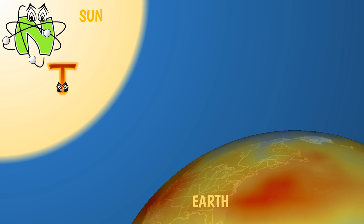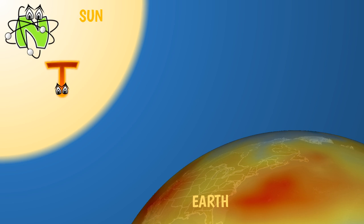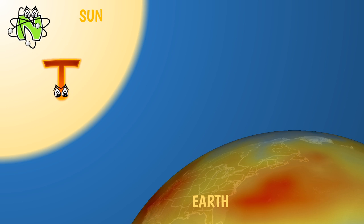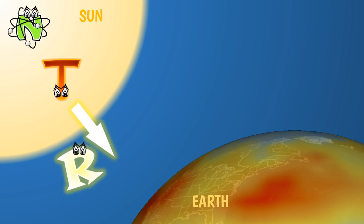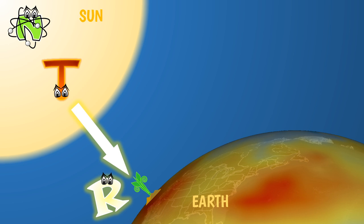In the center of the sun, nuclei combine to become bigger nuclei. In this process, nuclear energy becomes smaller and thermal energy becomes bigger, which is why the sun is so hot. Light is also produced — radiant energy. This light makes its way to the sun's surface and escapes into space. Some of it reaches our planet and is absorbed and processed by plants. Radiant energy is transformed into chemical energy.